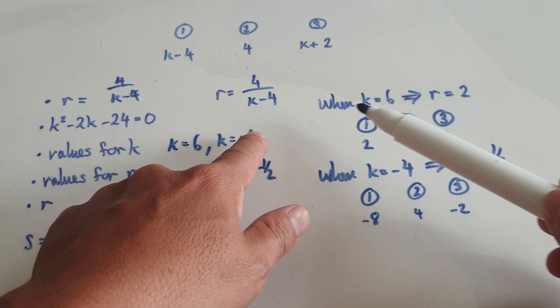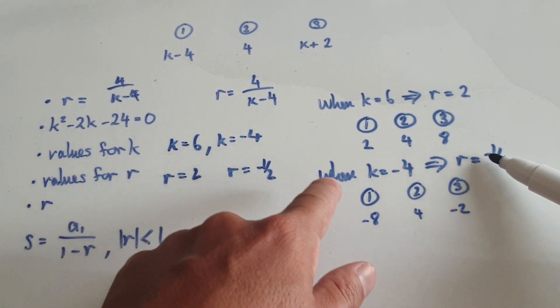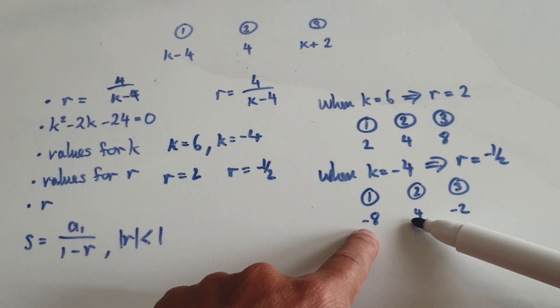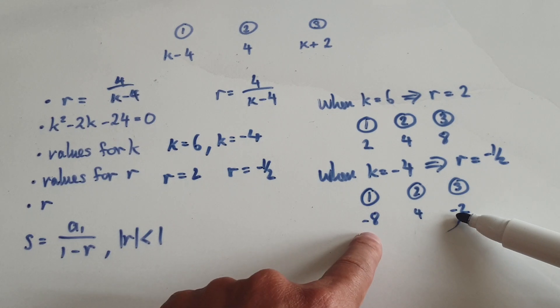We got to a stage where when k is negative 4, r would be negative a half, which means your first term is negative 8, you times by negative a half and then you times by negative a half again.